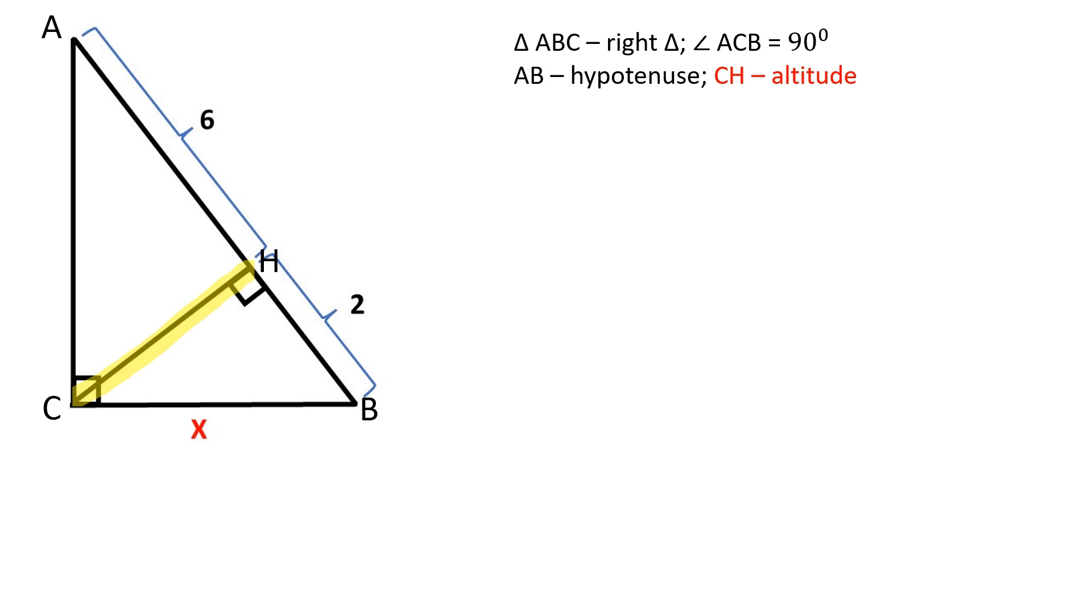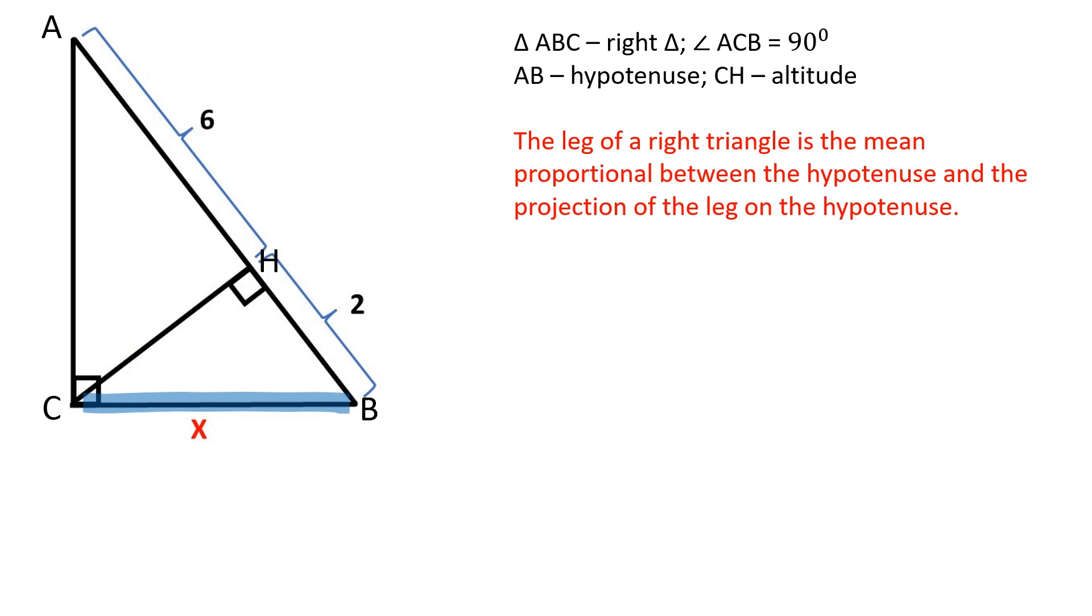CH is the altitude drawn from the right angle to the hypotenuse and divides the hypotenuse into two segments. The leg of a right triangle is the mean proportional between the hypotenuse and the projection of the leg on the hypotenuse.